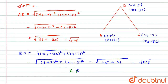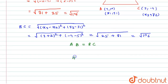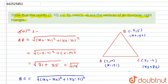From here I can conclude that the length of AB equals the length of BC. This only happens in an isosceles triangle, because in an isosceles triangle two sides are always equal. Hence it is proved that the given vertices are of an isosceles triangle.